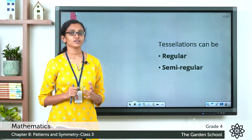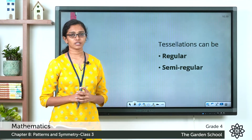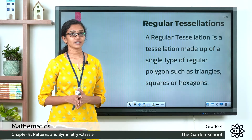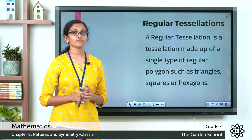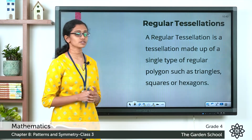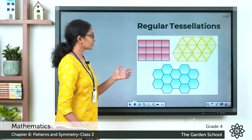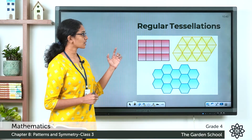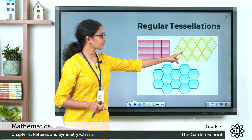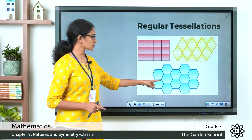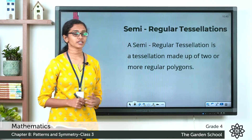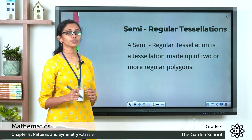Now let's look at the different types of tessellations. Tessellations can be regular or semi-regular. A regular tessellation is one which is made up of only one type of regular polygon, such as squares, hexagons, or triangles. Here are a few examples of regular tessellations: here is one made with squares, here is one made with triangles, and here is one made with hexagons.